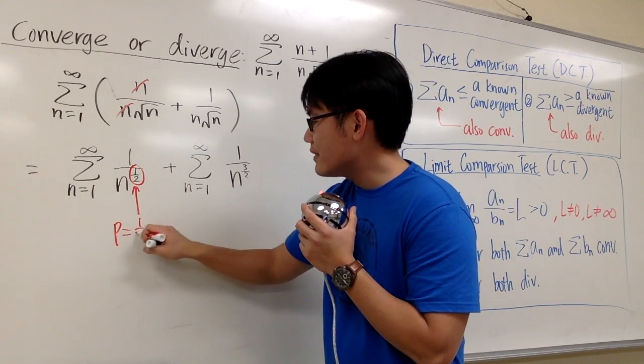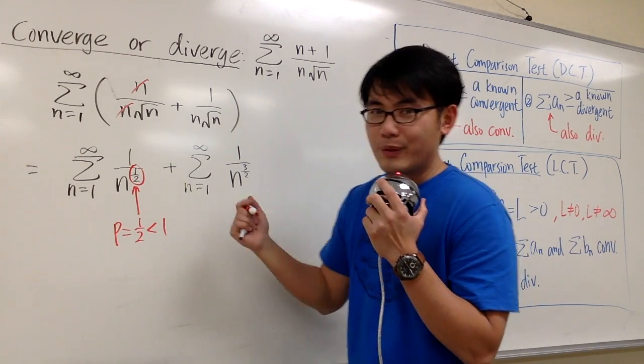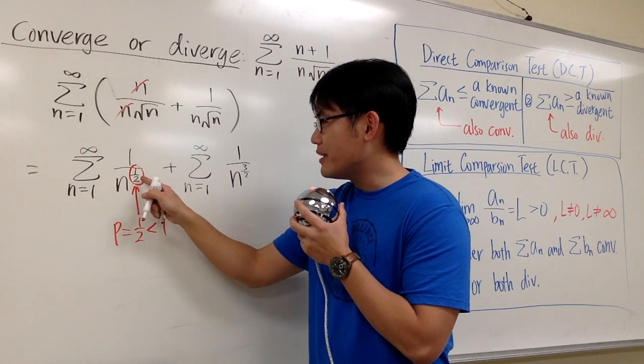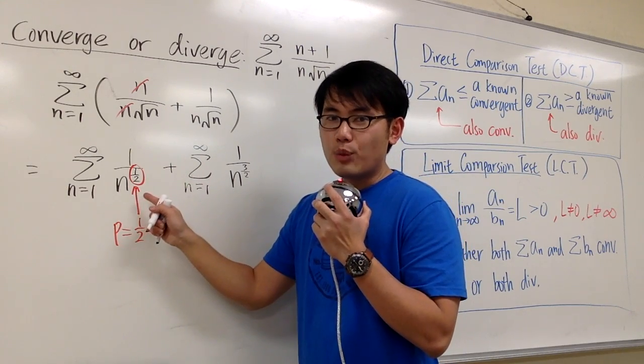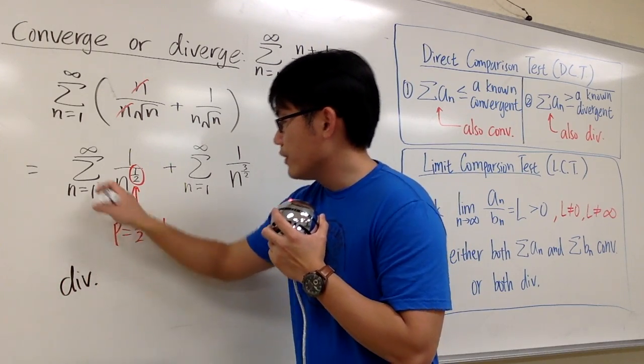And then more importantly, one-half is less than one. And we get to say that because the power here in the p-series form, if it's less than one, we can say this diverges for the first one.